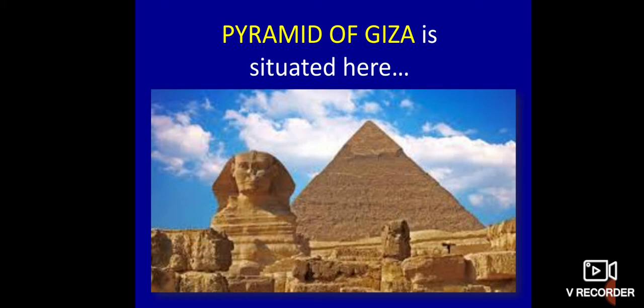Egypt mein capital hai Cairo, and the longest river Nile flows through this country, and the famous Pyramid of Giza. I would like to tell you a little about this pyramid — it is the oldest and largest of the three pyramids in the Giza complex. It is the oldest of the Seven Wonders of the World. Jo hamaari seven wonders of the world hai, un mein se ek hai yeh Pyramid of Giza.